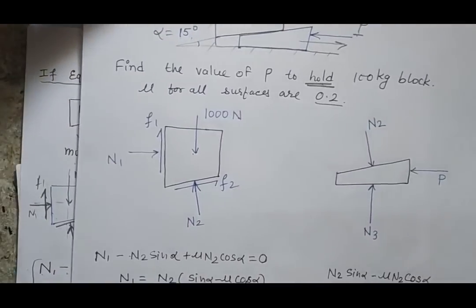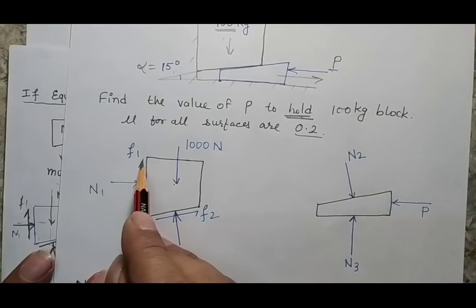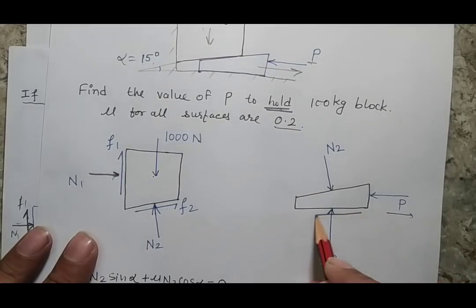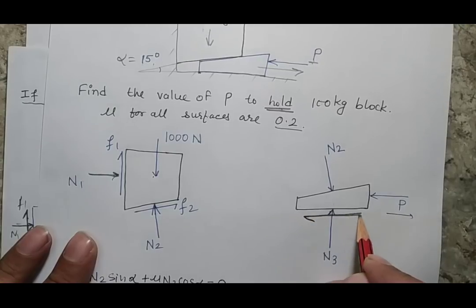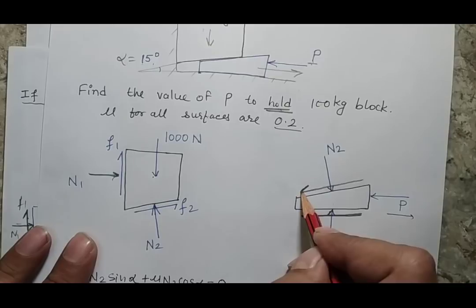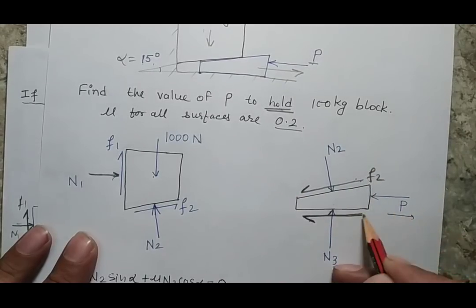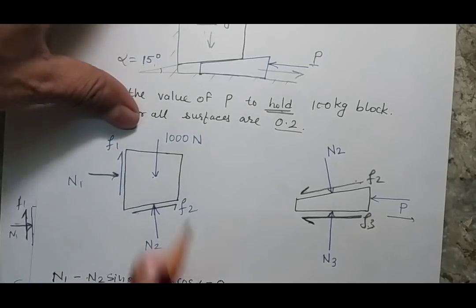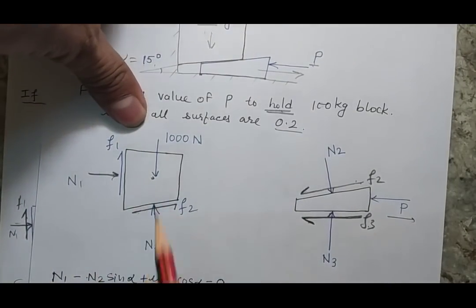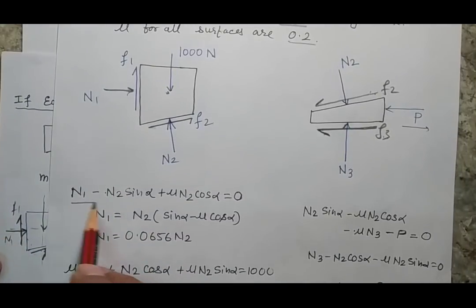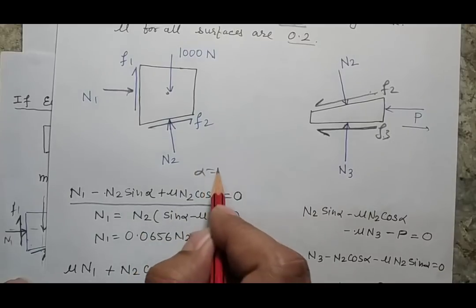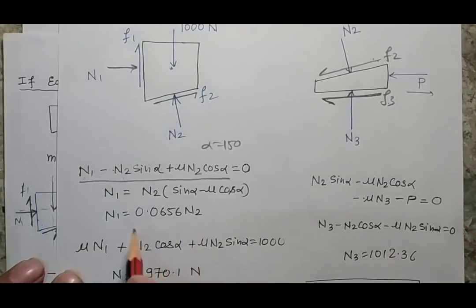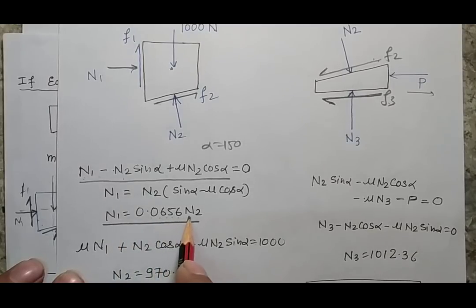Based on these two directions of motion, I can define the different forces. As the body is coming down, this is the frictional force and this is the normal reaction. For the wedge going in this direction, this is the direction of friction at the bottom surface, and using the trick that one direction defines the other, this is F2 and F3. Now these are my free body diagrams and I can write the equilibrium equations. For the horizontal force balance with alpha = 15 degrees, I get a relation between N1 and N2: N1 = 0.0656 N2.